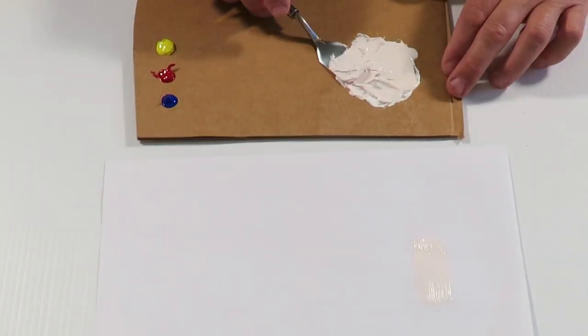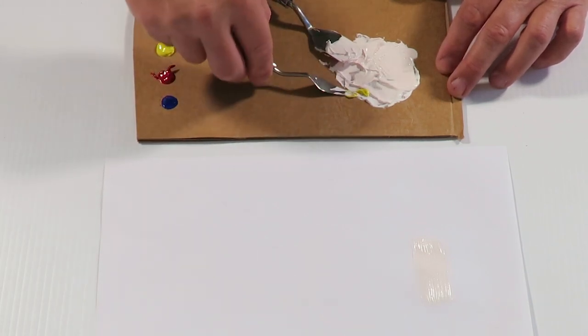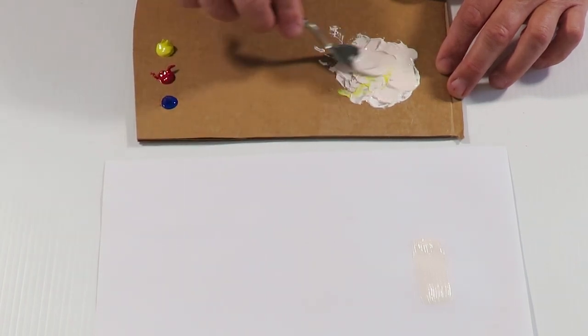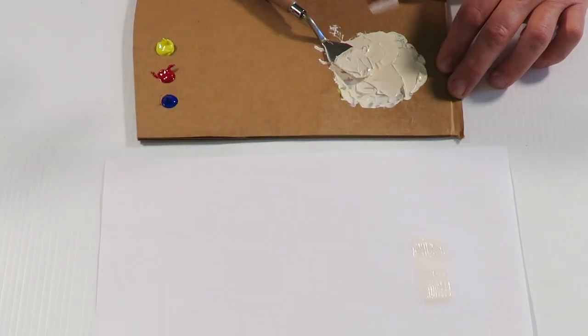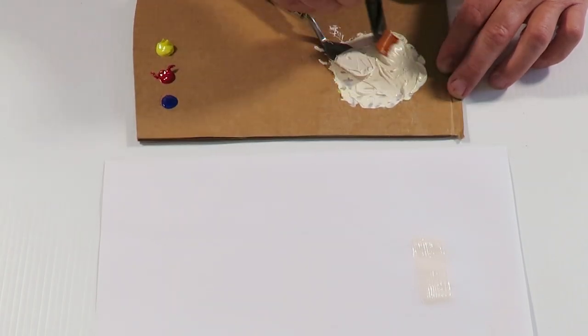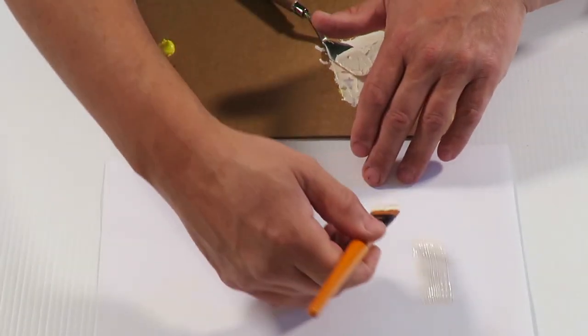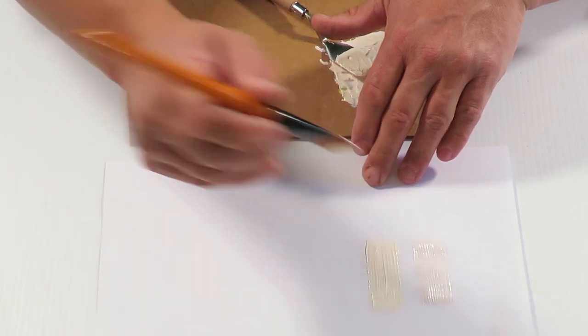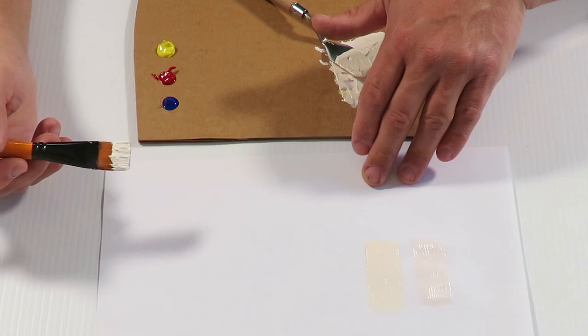So we're just going to add a bit more yellow to that. Just a little bit of yellow to that paint there. Mix that up and paint this on the paper so you can see what it looks like. That's more like an ivory color.